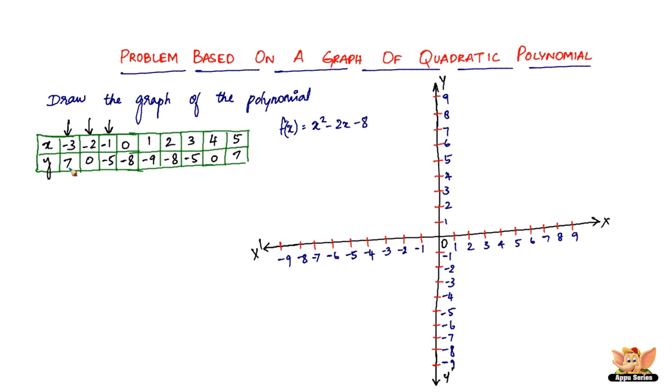First point is negative 3 and 7. So we've got a negative 3 on the x axis and then we've got a 7 on the y. So somewhere here. And we've got a negative 2 and a 0. Negative 2 and a 0 is going to be right here itself because the y is 0. And we've got a negative 1 and a negative 5. So negative 1 on the x and negative 5 on the y. So it will be here.